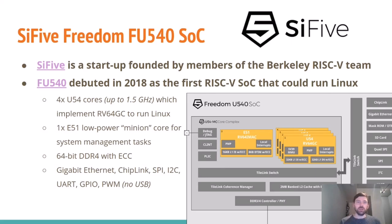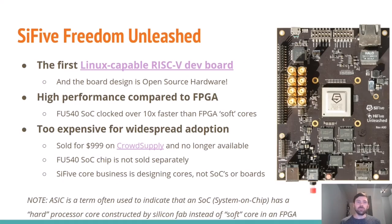For actual chips, SiFive is a startup founded by some of the Berkeley team. Back in 2018 they debuted the FU540, the first RISC-V system-on-chip that could run Linux. It had four 64-bit cores for running Linux plus a lower-power core for system management, a 64-bit DDR4 interface, gigabit Ethernet, and standard peripherals — unfortunately not USB. Along with that, they announced the first Linux-capable RISC-V dev board, called the SiFive Freedom Unleashed.